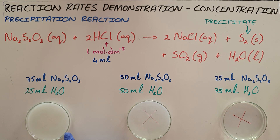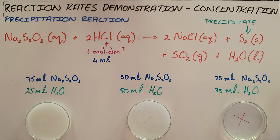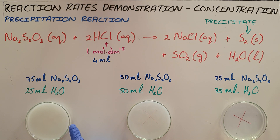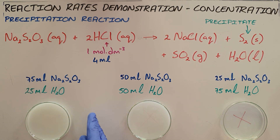Obviously you can't experience this, but there's also some gas being released that we can smell, and water and sodium chloride are also being formed. As expected, the higher concentration of sodium thiosulfate has resulted in more collisions — meaning more collisions per second, meaning more successful collisions — which results in a faster rate of reaction.